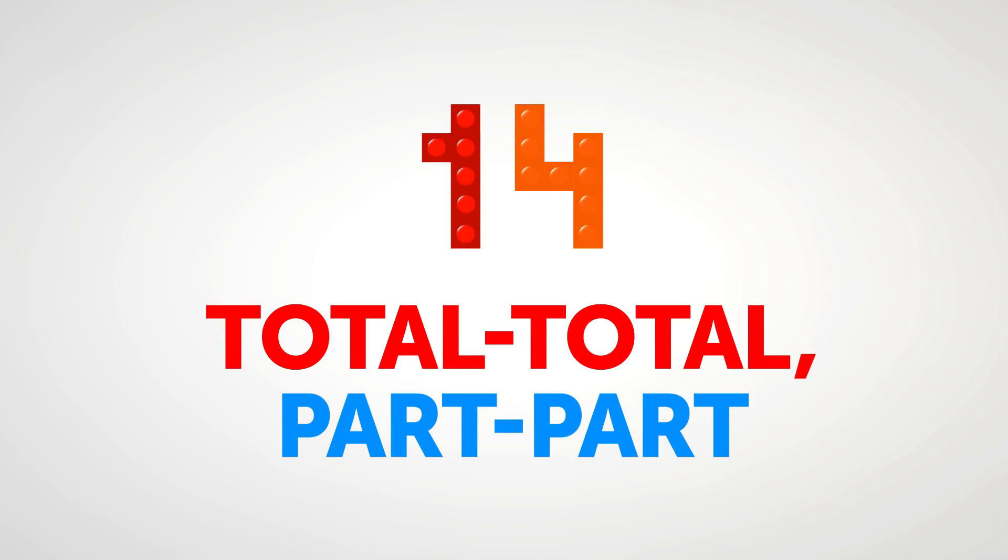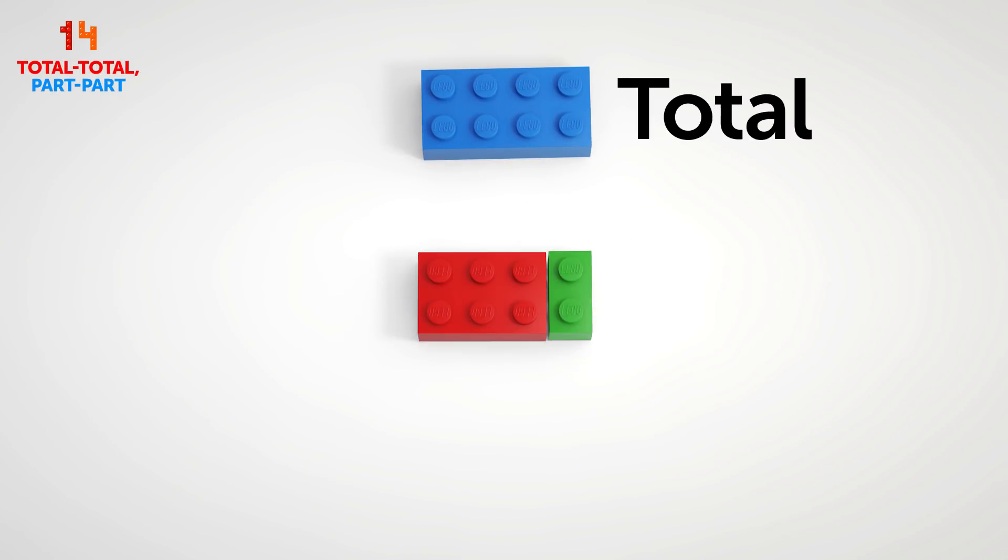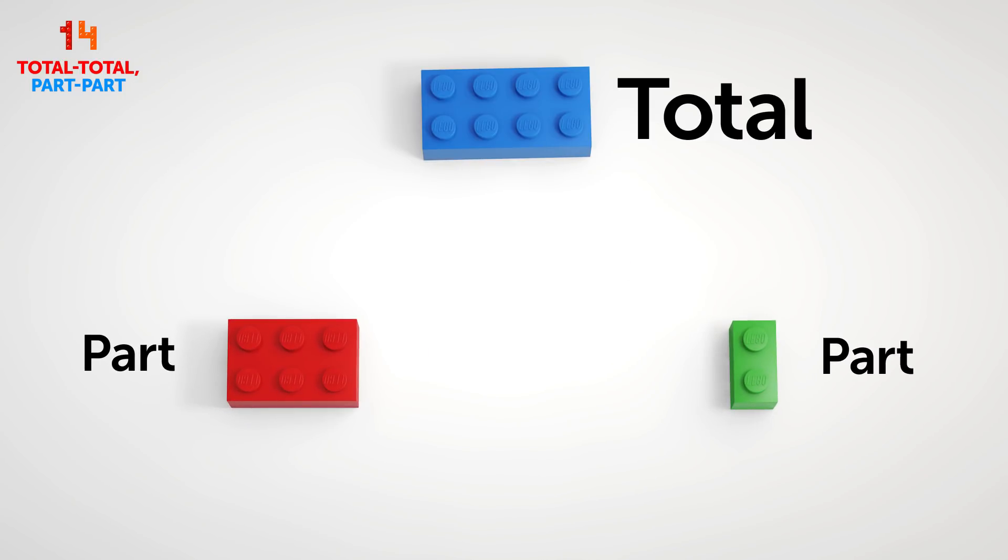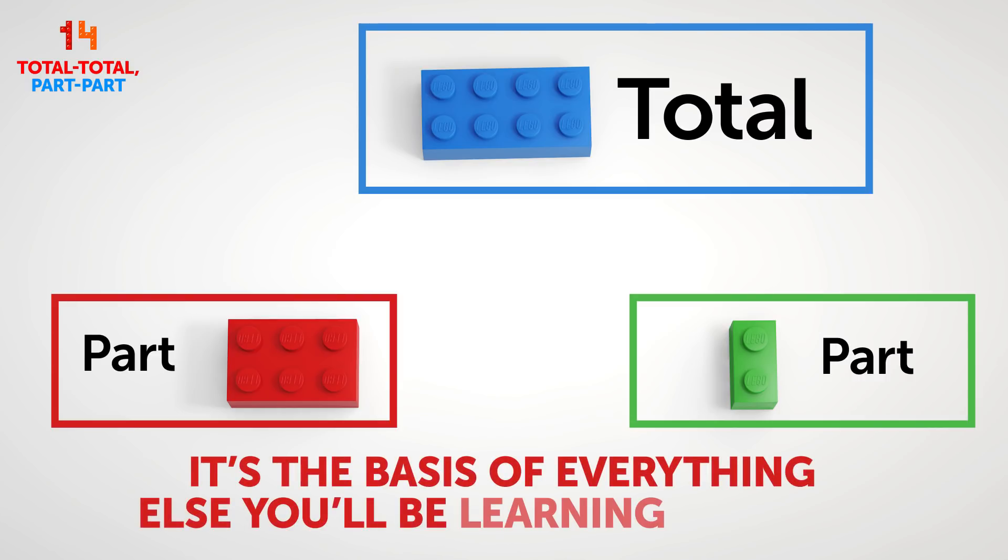Counting down from number 14, total-total, part-part. With Legos, the idea of a total and its parts is way easier than staring at numbers on a page. There's probably no better way to explain it to your kids. Move the blocks around, put them side by side, and then separate them from each other. Use blocks of different colors to make it even more visually apparent. It's important to understand the total-total, part-part concept, because it's the basis of everything else you'll be learning later on.